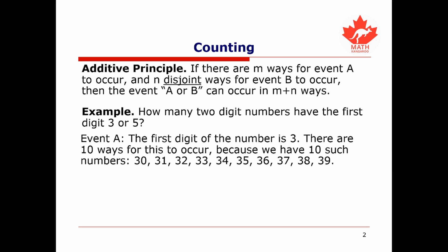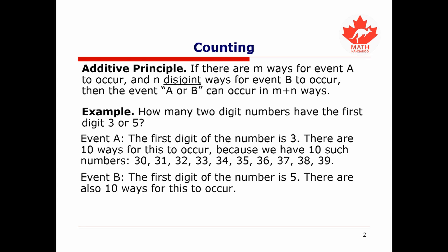Let's call event A the event where the first digit of our number is a 3. There are 10 different ways for a two-digit number to have the digit 3 as its first digit, because there are 10 such numbers — namely 30, 31, and so on all the way up to 39. Secondly, let's call event B the event where the first digit of our number is a 5.